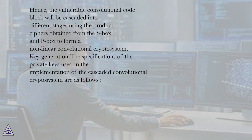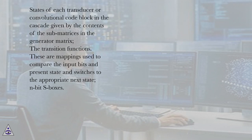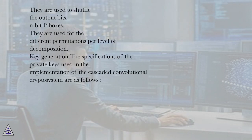Key generation. The specifications of the private keys used in the implementation of the cascaded convolutional cryptosystem are as follows: states of each transducer or convolutional code block in the cascade, given by the contents of the submatrices in the generator matrix; the transition functions, which are mappings used to compare the input bits in present state and switch to the appropriate next state; N-bit S-boxes, used to shuffle the output bits; and N-bit P-boxes, used for the different permutations per level of decomposition.